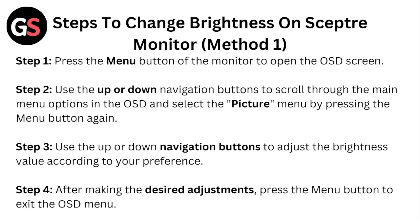Step three: use the up or down navigation buttons to adjust the brightness values according to your preferences. Step four: after making the desired adjustments, press the menu button to exit the OSD menu.